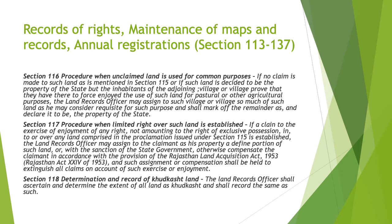Section 116 talks about the procedure whenever an unclaimed land is used for any common purpose. If there is no claim made to such land as mentioned in section 115, or if such land is decided to be a property of the state but the inhabitants of the adjoining village prove that they have theretofore enjoyed the use of such land for pastoral or other agricultural purposes, then the land record officer will assign to such village as much land as he may consider requisite for such purpose and shall mark off the remainder and declare it to be a property of the state.